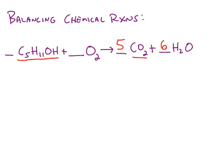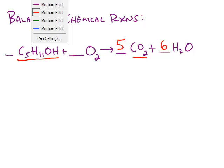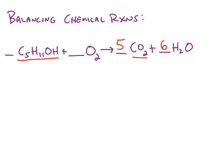Notice I started with the carbon and the hydrogen because they only appear one time on the reactant side and one time on the product side. I leave the oxygen until the very end because oxygen shows up in every chemical in this example.